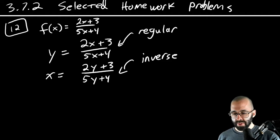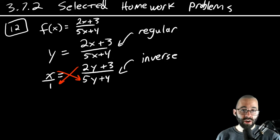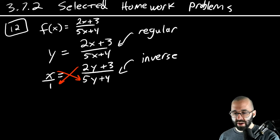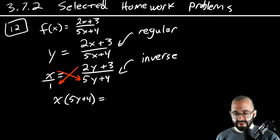To solve this equation, we're going to multiply both sides by the denominator. Another way you can think about this step, if this makes more sense, is you can think about it as cross-multiplying. That also works. X divided by one. Then one side is X times five Y plus four, and the other side is one times two Y plus three.